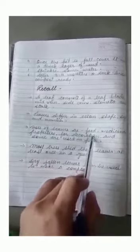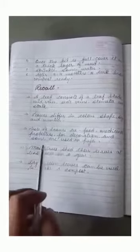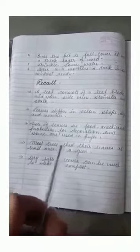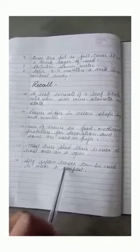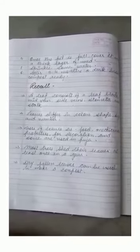We use leaves as food, for medicinal properties, for decoration and some uses in puja. Most trees shed their leaves at least once in a year. Dry and fallen leaves can be used to make compost. Thank you students.